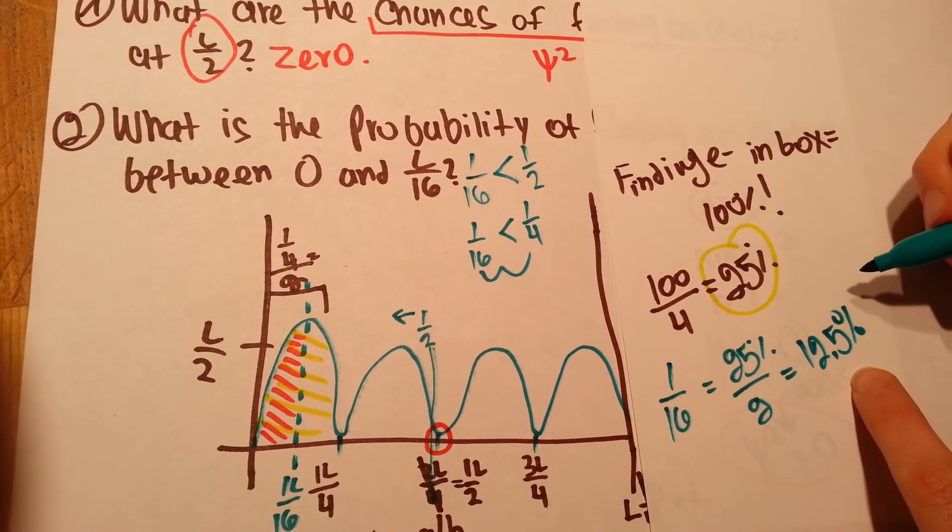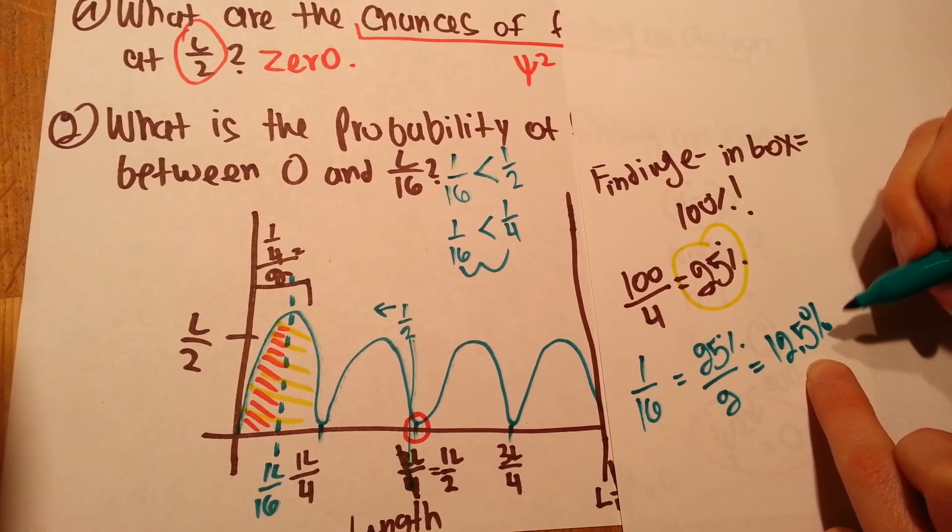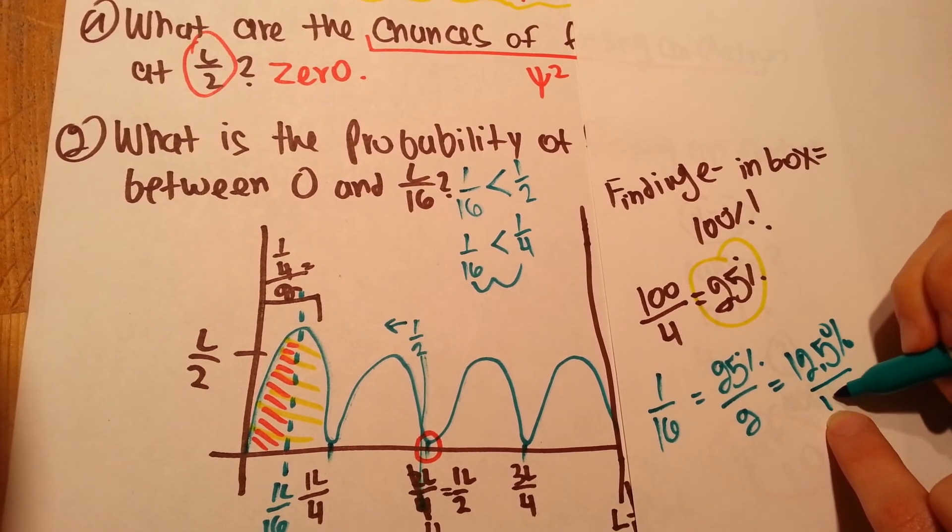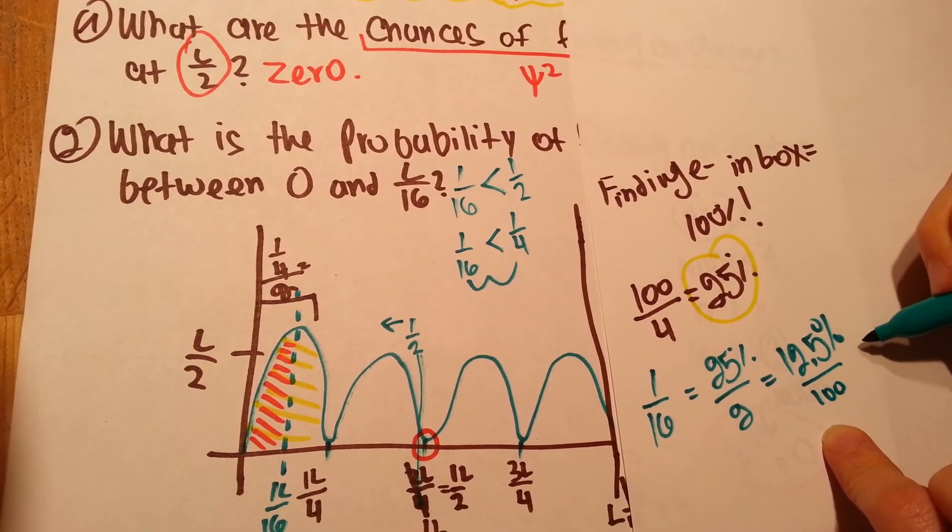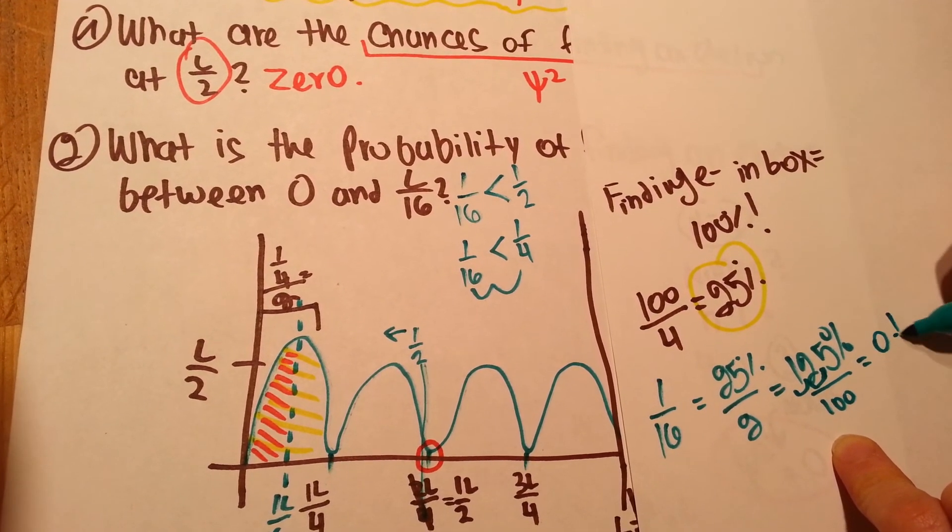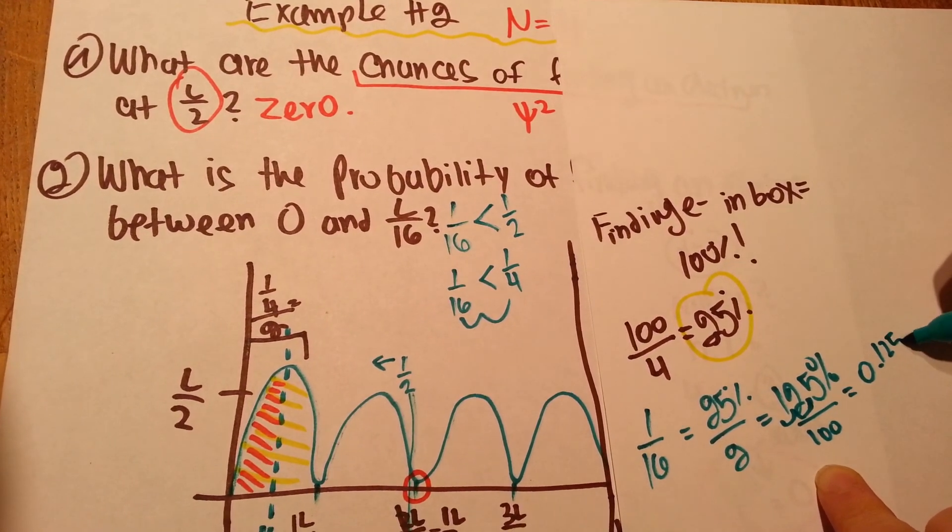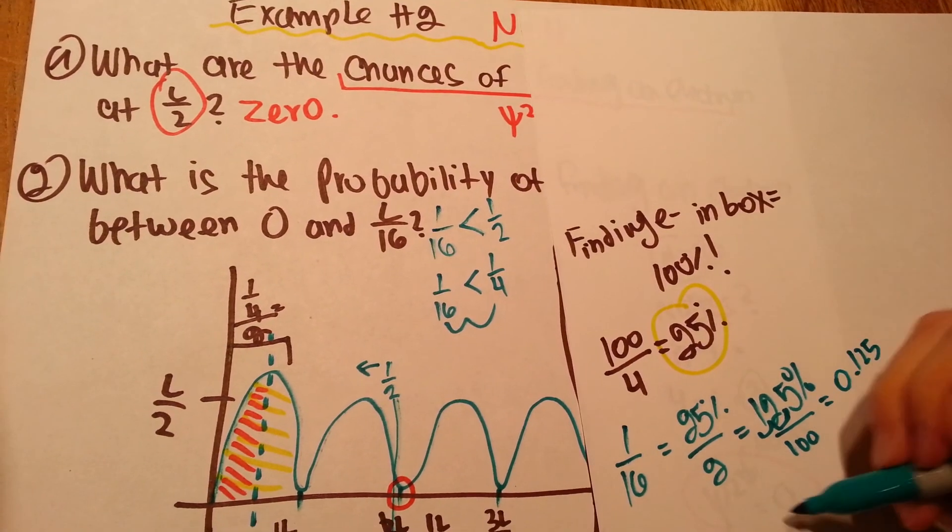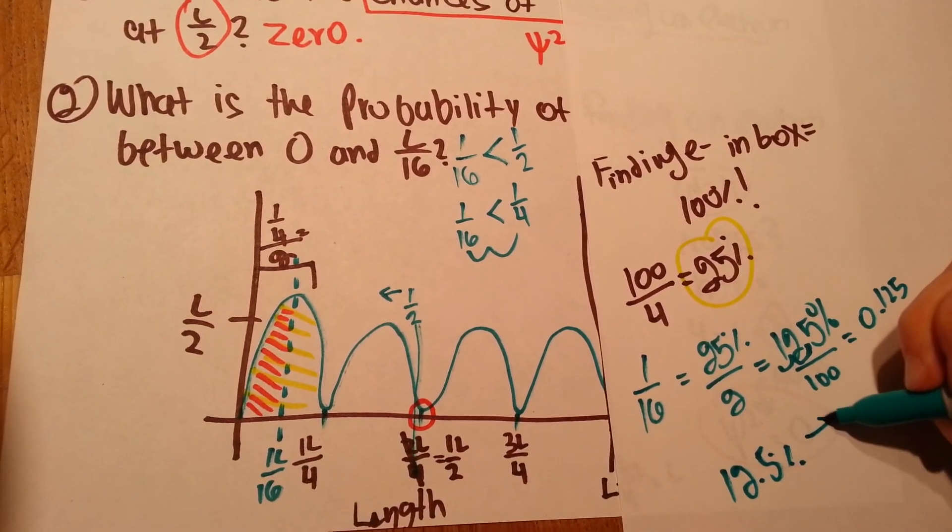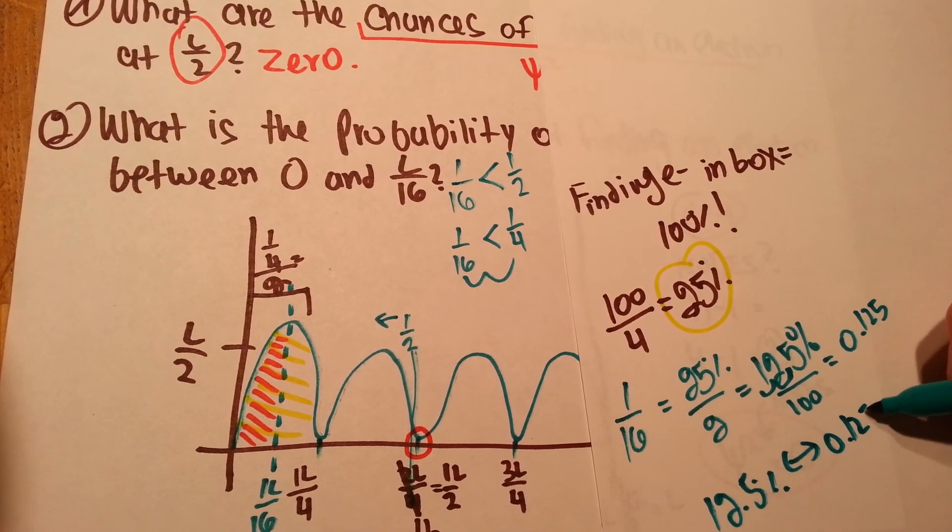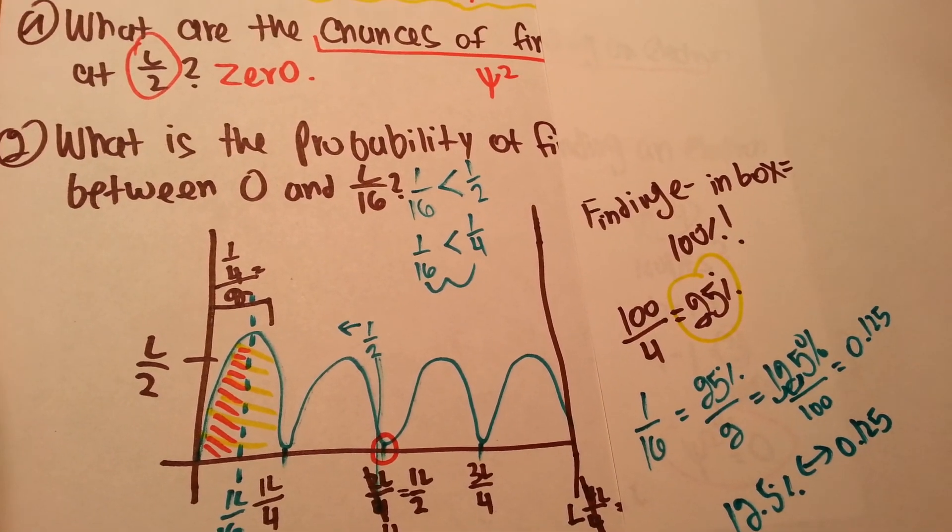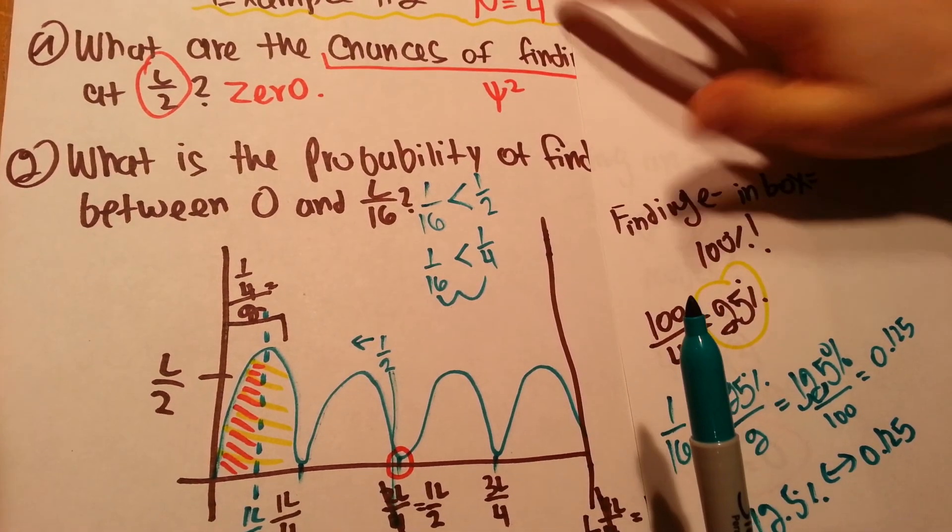If your teacher doesn't want this in percentage, but they want it in actual number, you just need to divide this by 100. And dividing this by 1 is going to be 0.125. But, essentially, writing either or is correct. So, this is how you solve a particle-in-a-box problem for n equals 4.